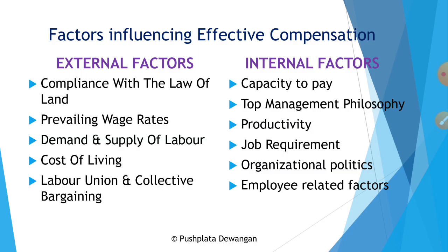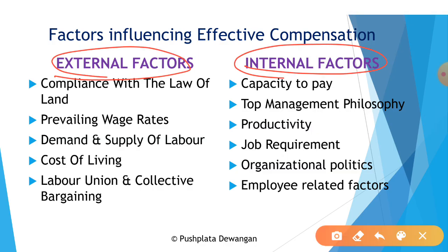There are two categories of factors influencing effective compensation: external and internal. The first external factor is compliance with the law of the land — governments make certain rules regarding wages to be paid to employees, generally to protect workers from exploitation by management. In India, various acts have been enacted such as the Minimum Wages Act, Payment of Wages Act, Equal Remuneration Act, Contract Labour Regulation and Abolition Act, and the Payment of Bonus Act.